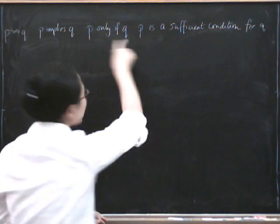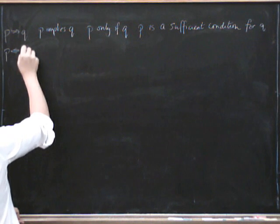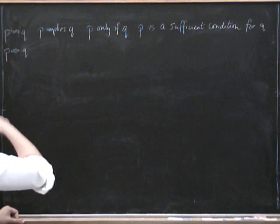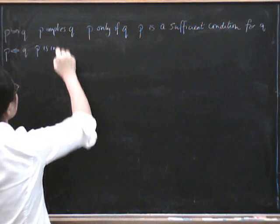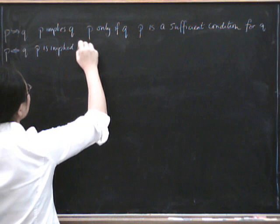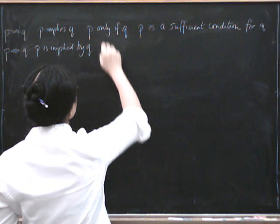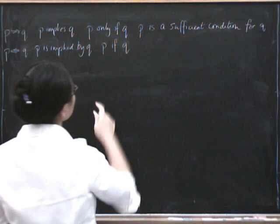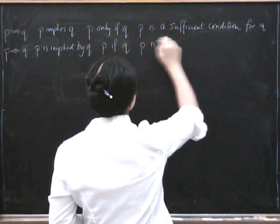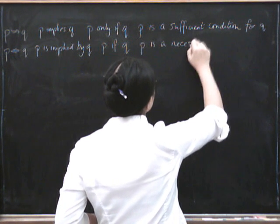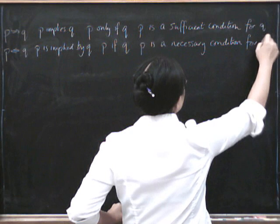So this only if thing can be confusing. I'll just put all the other possibilities up first. If we go backwards, that's from Q to P. We could say that Q implies P, but another way of saying that is P is implied by Q, and another way of saying that is P is true if Q is true. That's not the same as only if, now we've got if. And this is the same as saying P is a necessary condition for Q.